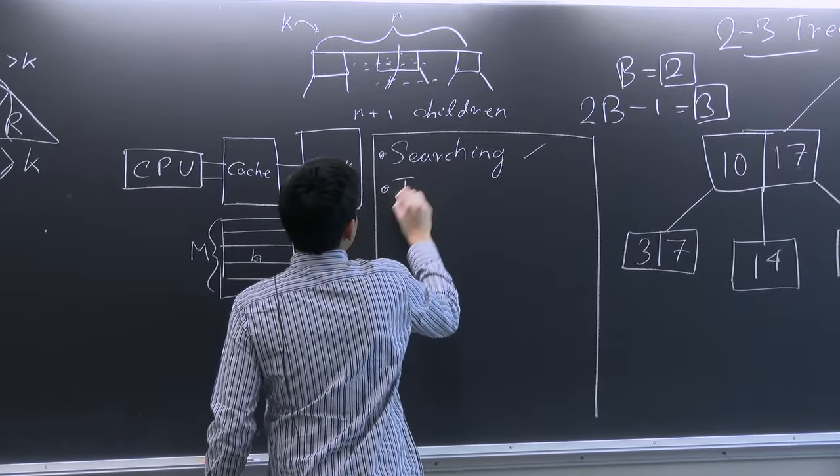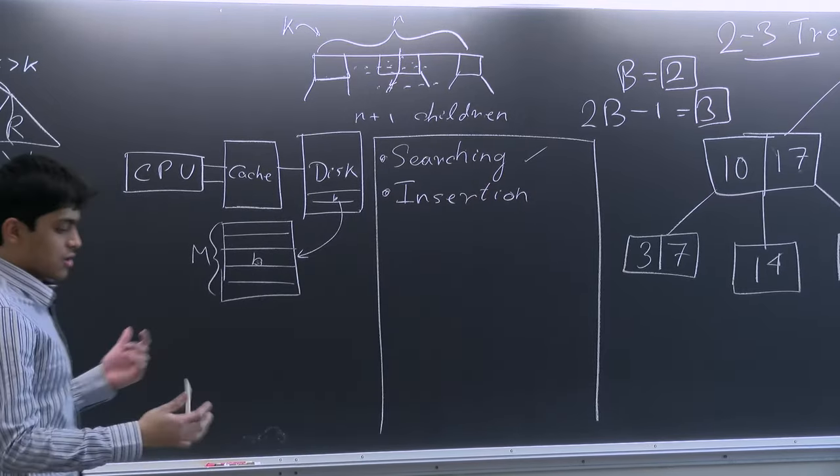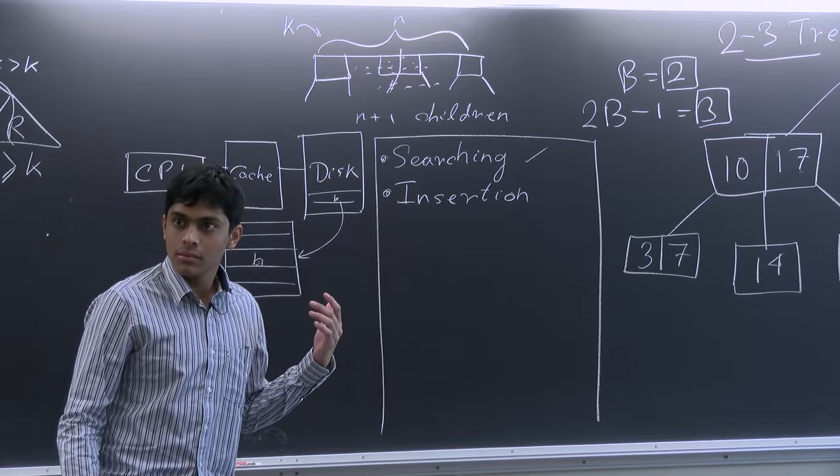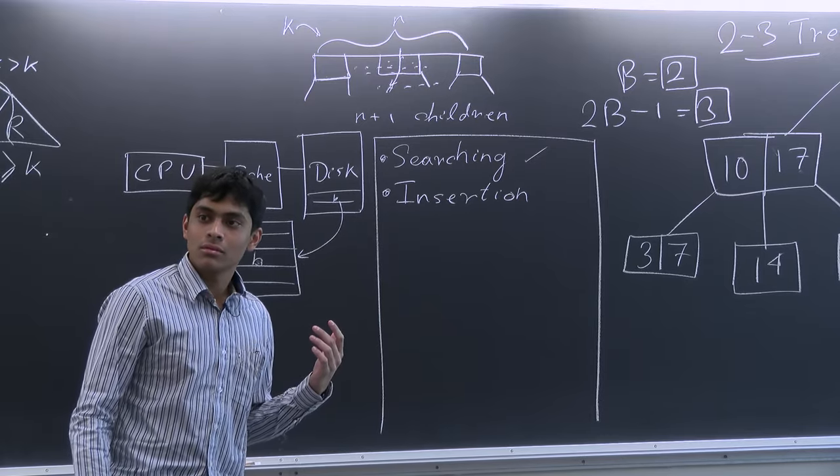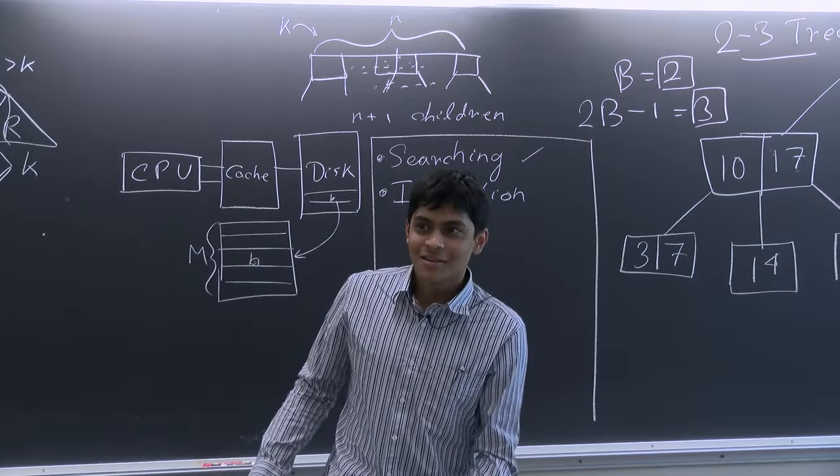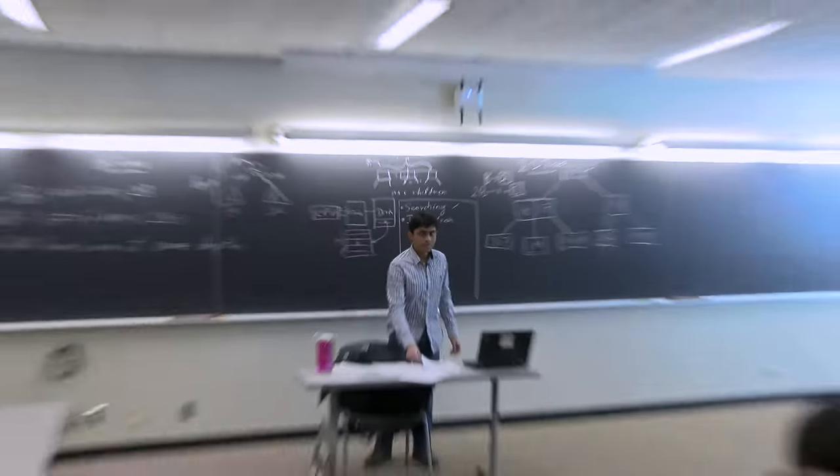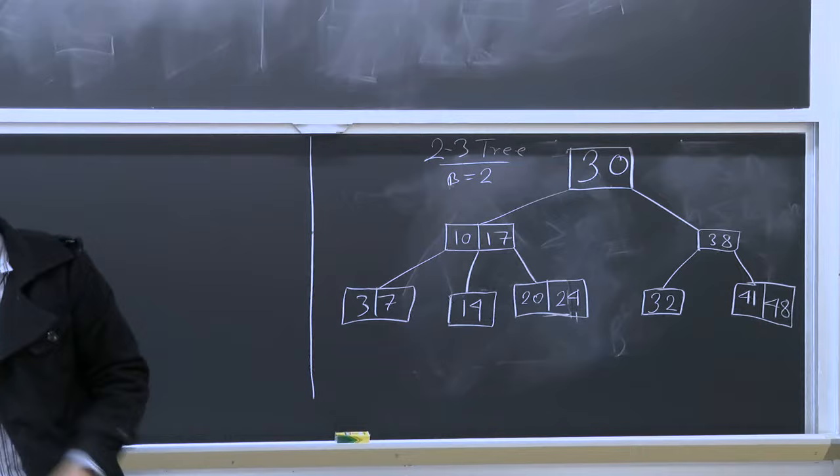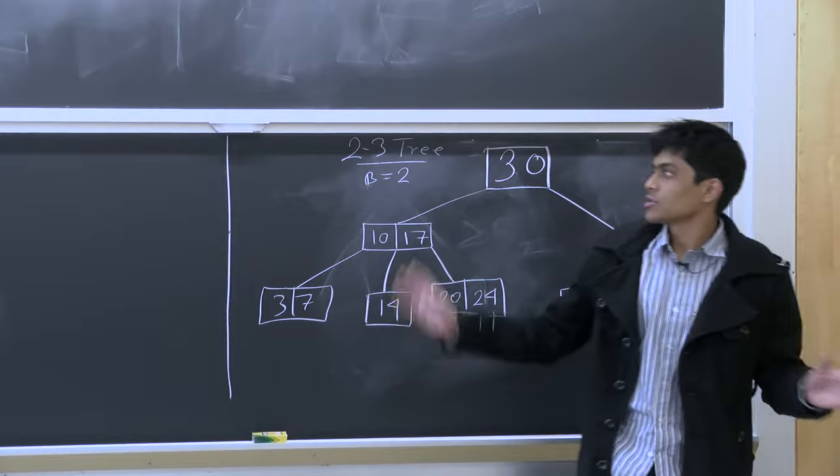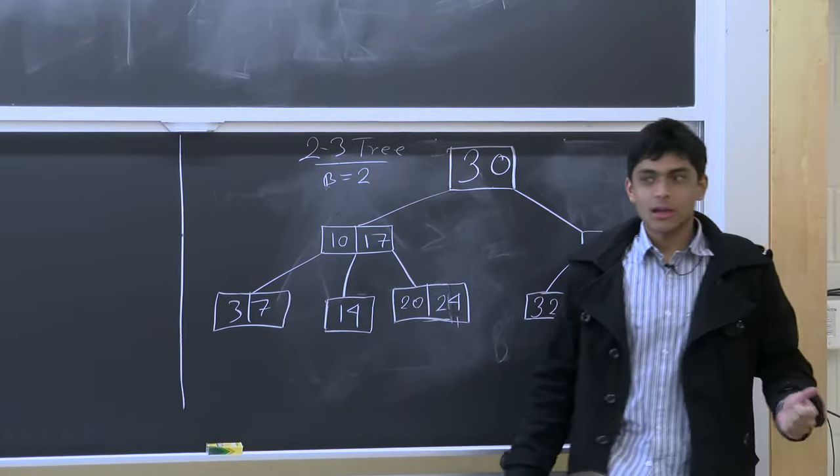So next is insertion. So insertion is a little more interesting than searching. Should we move back to the original room? Let's do that. Sorry for the hassle, guys. So before we resume, does anyone have any questions about the structure of B-trees? We rushed through that quite fast. So about how B-trees are structured? Everyone good with that? Also, any questions about searching in a B-tree? Or a BST?